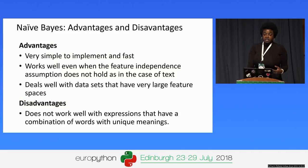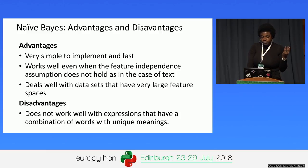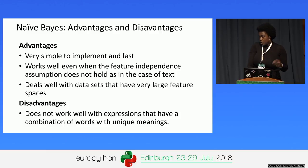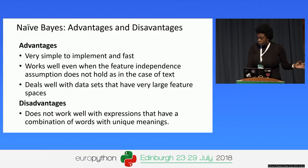Advantages of Naive Bayes: it's very simple to implement and it's very fast. It works well even when the assumption of feature independence doesn't hold, especially in terms of text. It deals well with datasets that have very large feature spaces. However, the naivety of Naive Bayes also makes it not work well with expressions that have a combination of words with unique meanings. For example, in Google's early days, if you searched for the basketball team Chicago Bulls, you would get results like the city of Chicago and bulls, not the actual basketball team.